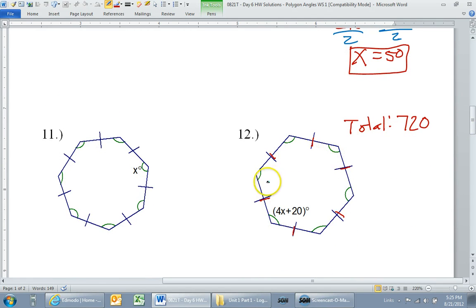Now, this time we were not given each individual angle. But we were told that all of these angles are the same. That's what these green markings mean. It means all the angles are congruent. That means, if I want to find the measure of one individual angle, I should be able to just divide by the number of angles.